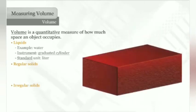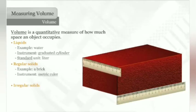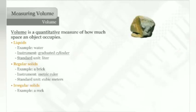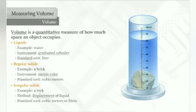An example of a regular solid is a brick. The volume of a regular solid is calculated based on measured length, width, and height, with the standard unit being cubic meters. A rock is an example of an irregular solid — its volume is determined by measuring how much liquid it displaces, recorded in cubic meters or liters.